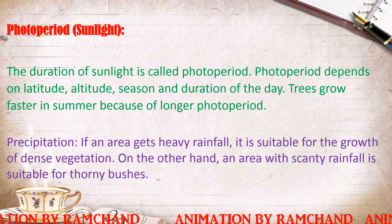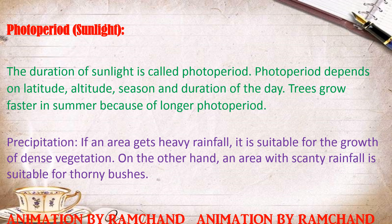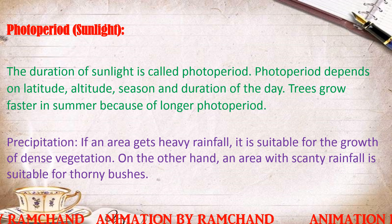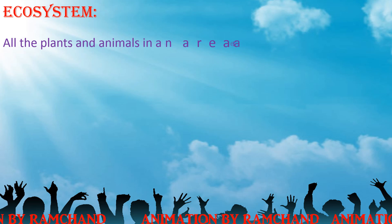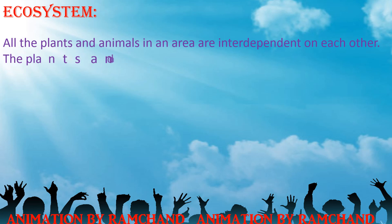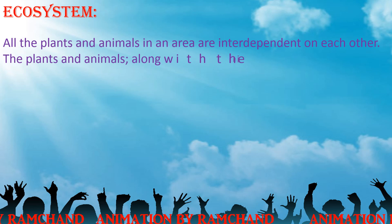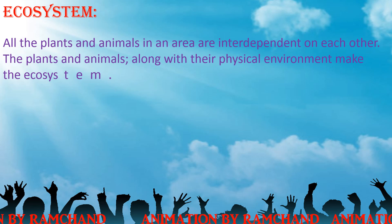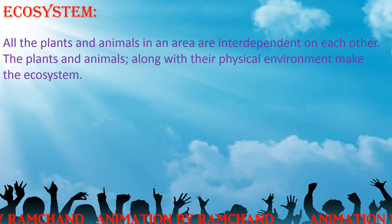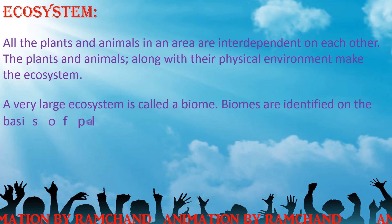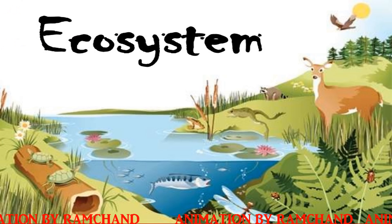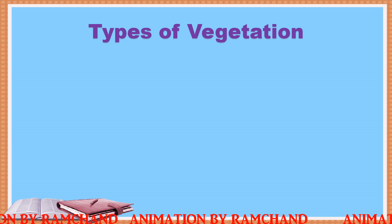An area with scanty rainfall is suitable for thorny bushes. All the plants and animals in an area are interdependent on each other. The plants and animals along with their physical environment make the ecosystem. A very large ecosystem is called a biome, and biomes are identified on the basis of plants.